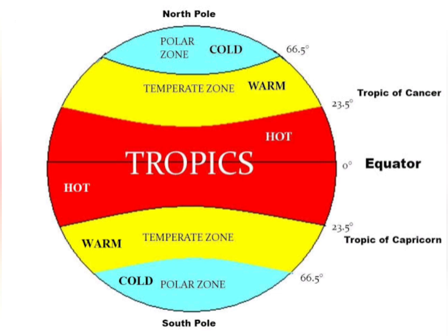Temperate zones remain warm as they receive slanted sun rays. The temperature here is not too hot nor too cold. The poles — both south and north — always remain very cold as they receive no sunlight or very little sunlight.